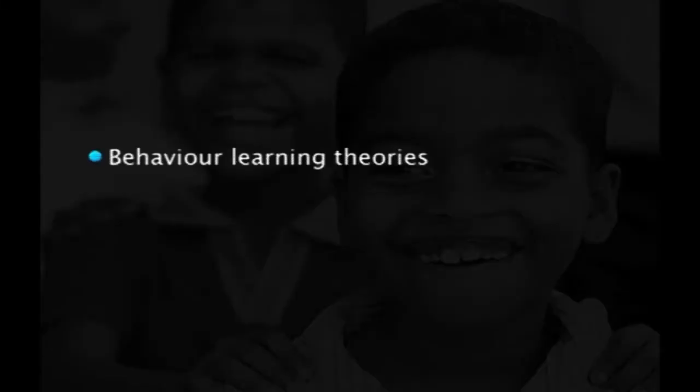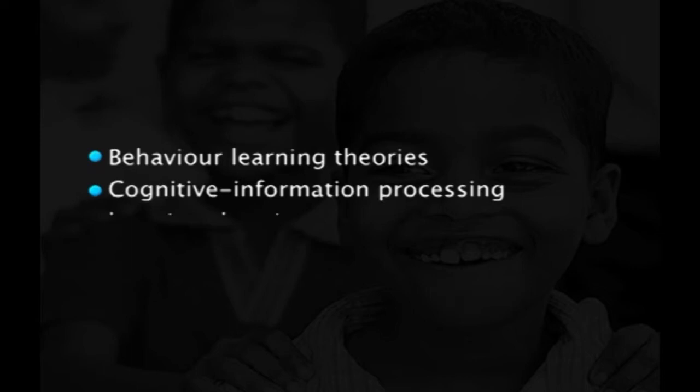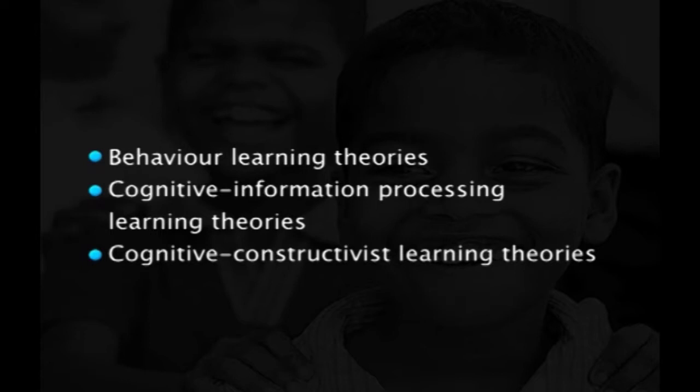Over the past centuries, educational psychologists and researchers have proposed many theories to explain how individuals acquire, organize, and deploy skills and knowledge. To help readers organize and apply this extensive body of literature, various authors have classified these theories in different ways. We can group the learning theories into three basic categories: behavioral learning theories, cognitive information processing learning theories, and cognitive constructivist learning theories.